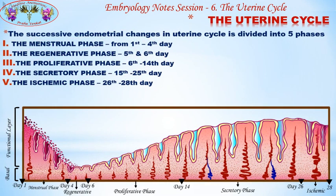The successive endometrial changes in the uterine cycle are divided into five phases: the menstrual phase from the first to fourth day, the regenerative phase on the fifth and sixth day, the proliferative phase from the sixth to fourteenth day, the secretory phase from the 15th to 25th day, and the ischemic phase from the 26th to 28th day.